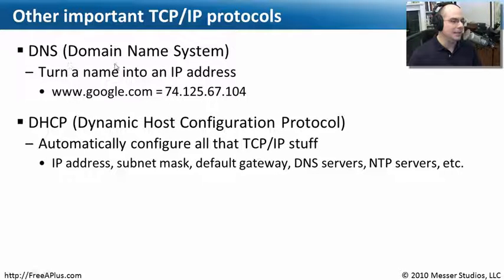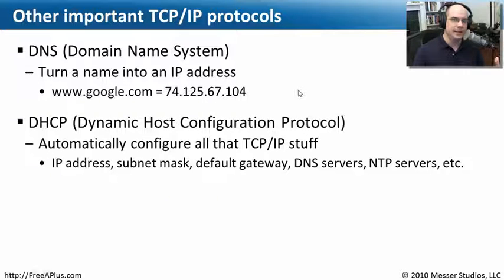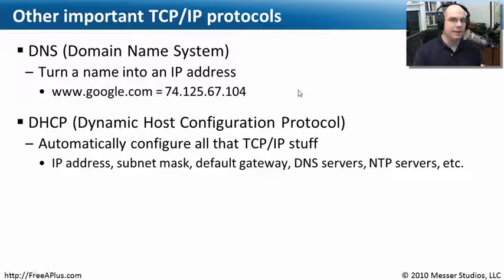None of that would happen unless we had a DNS server. So if you need to communicate out to a different subnet and you only know the name of those devices, you have to know where your DNS servers are and how they're configured. Before any of that happens, you have to be given an IP address, a subnet mask, a default gateway, and the name of a DNS server.